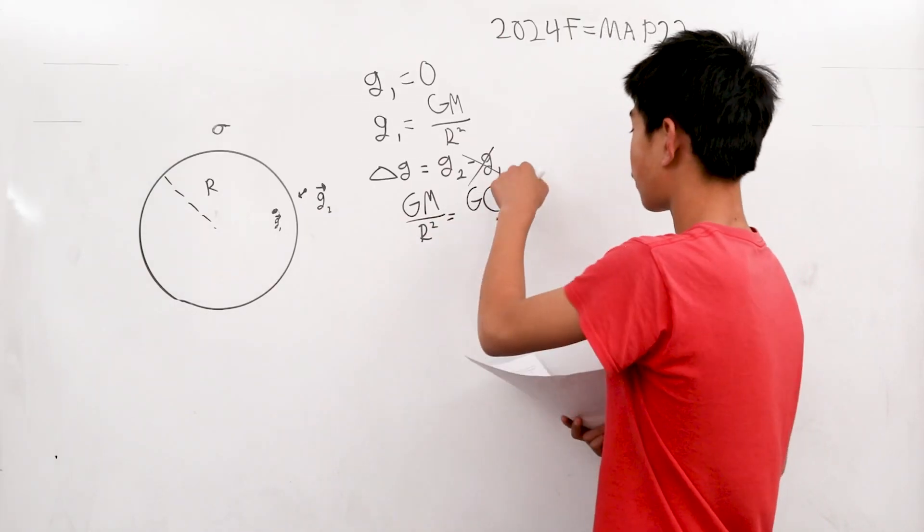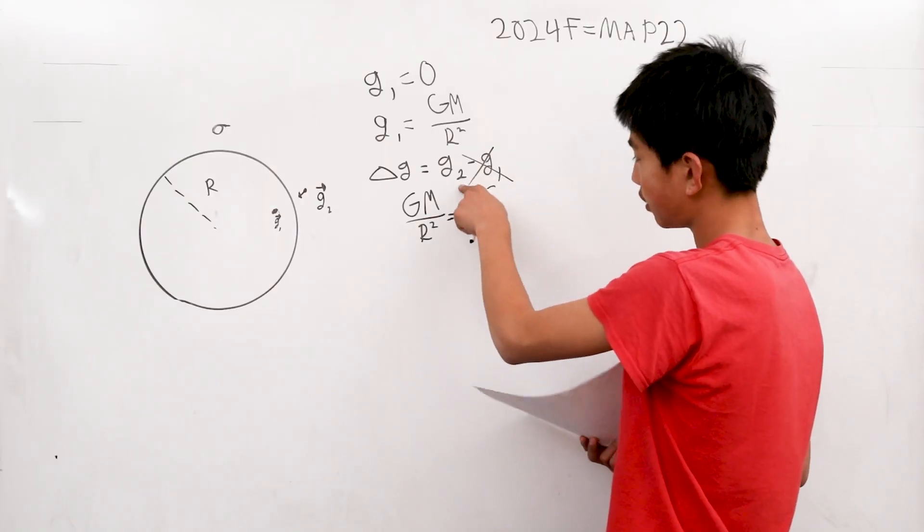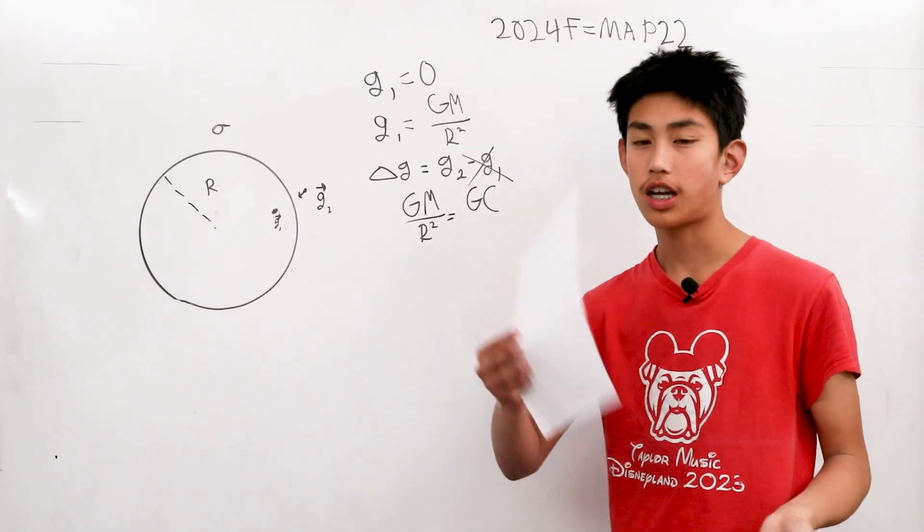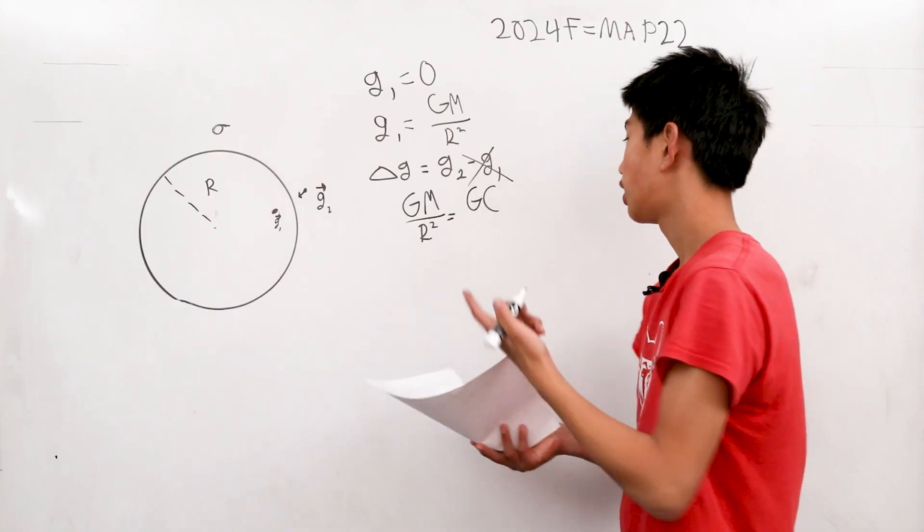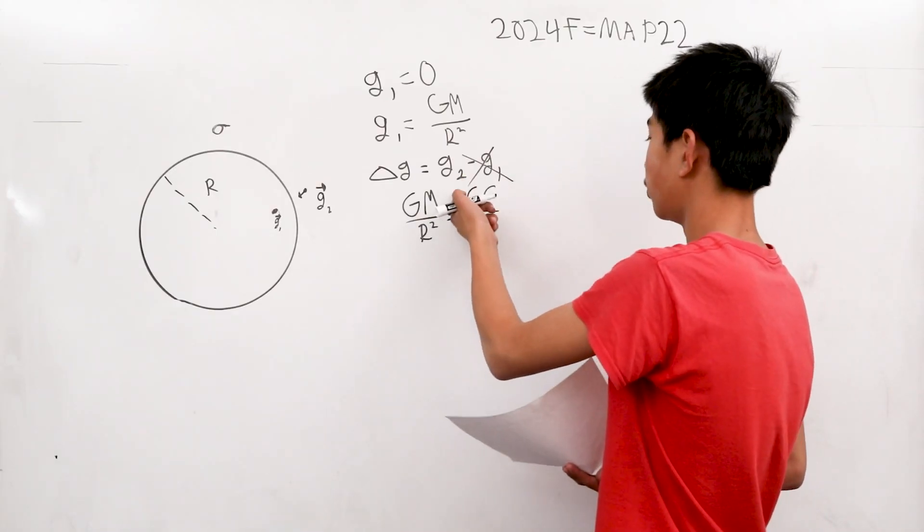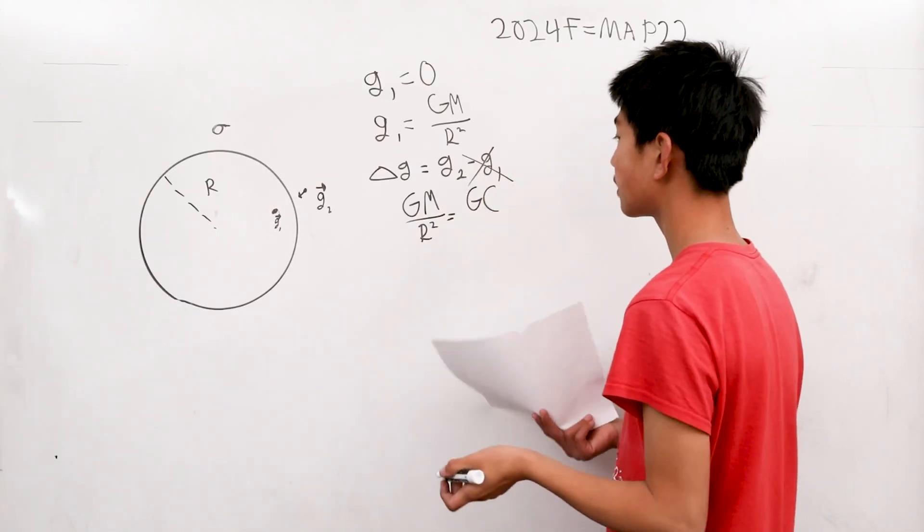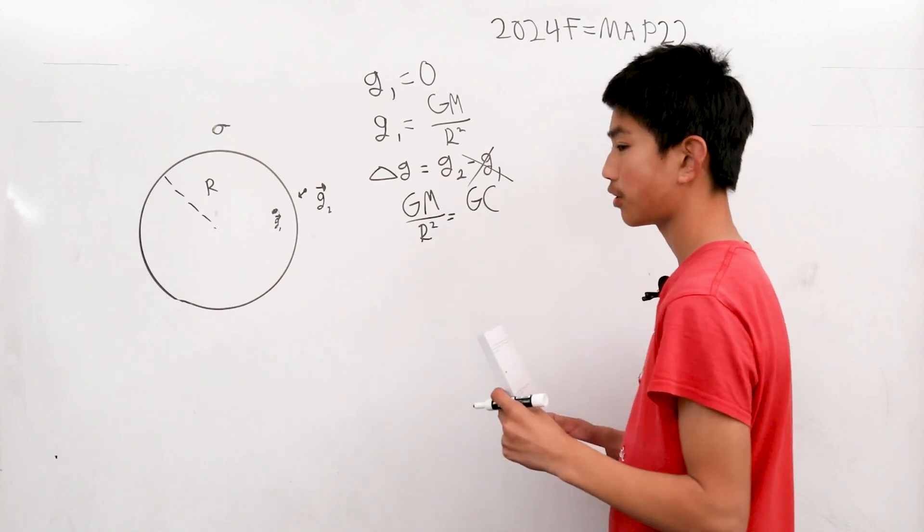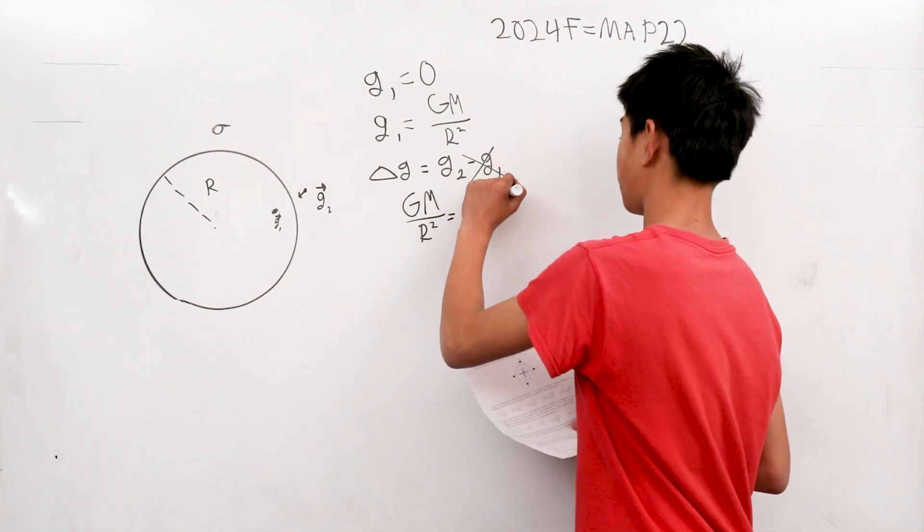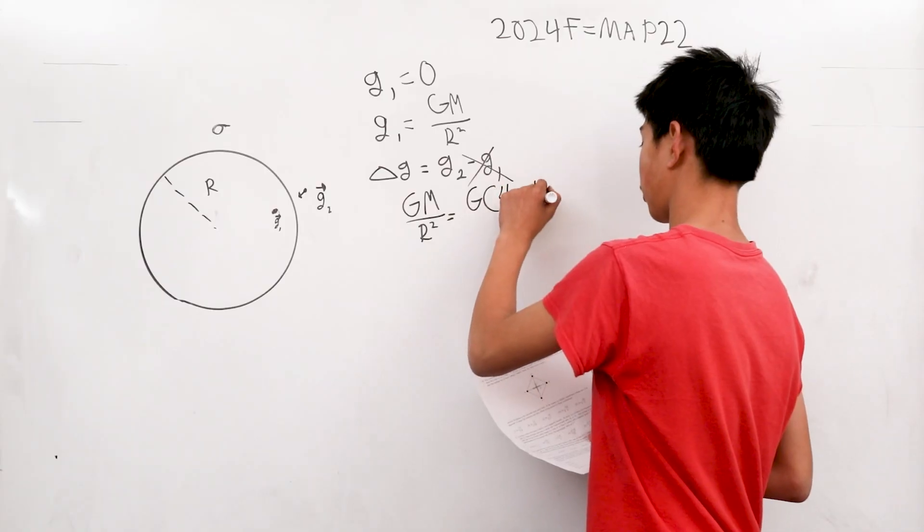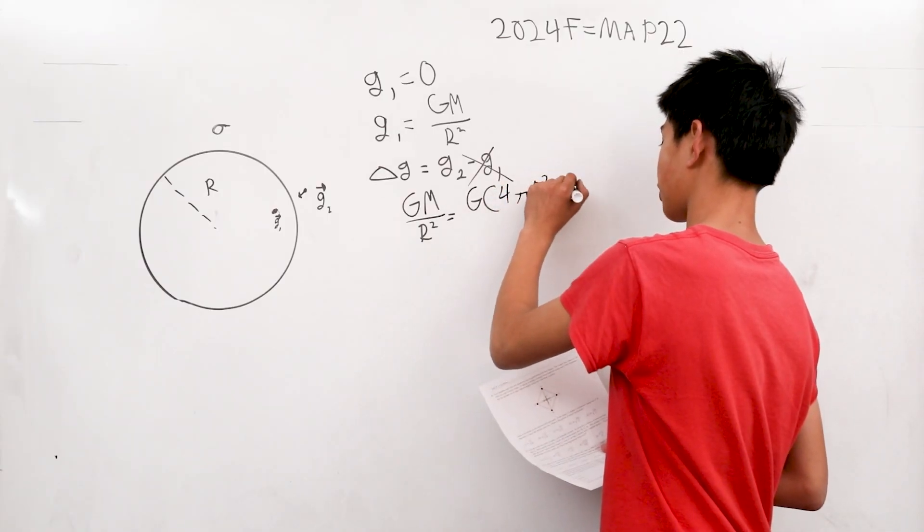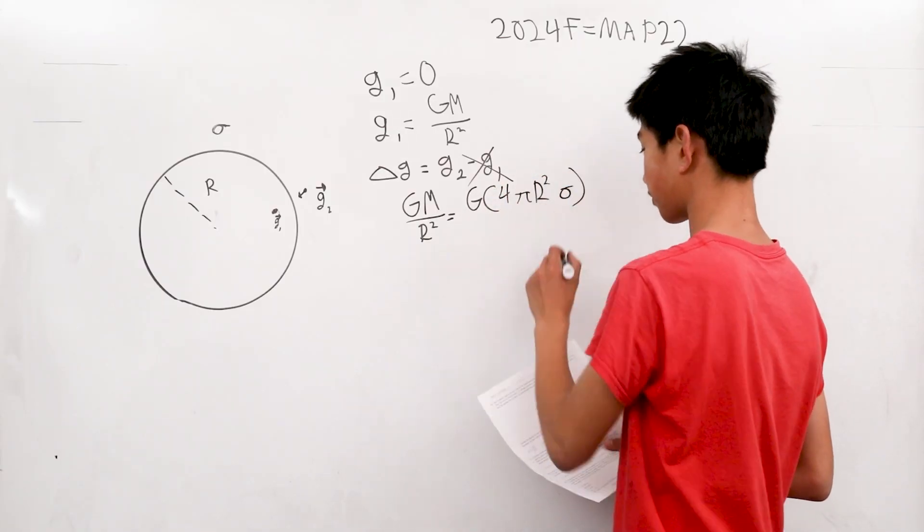Since this is our first orientation and this is our second orientation, we can just use the circle formula. So we let 2 be our radius, so pi R squared, that's 4 pi R squared times sigma here.